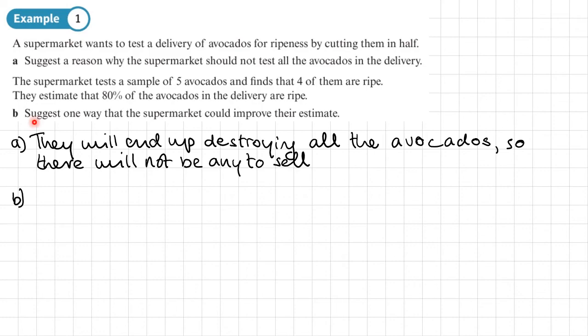Well, they could improve their estimate by taking a larger sample. Five avocados, I mean, I don't know how many they've had delivered, but five avocados is quite a small sample. So they can improve their estimate by increasing the size of the sample.